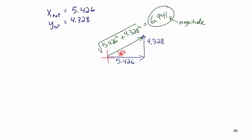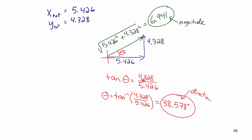To calculate the direction, I'm looking for the angle theta relative to the X axis. The Y side, 4.328, is my opposite side and the X side, 5.426, is my adjacent side. So the tangent of theta equals 4.328 over 5.426. To get the angle itself, I use the inverse tangent function. Theta equals the inverse tangent of 4.328 divided by 5.426. With the calculator in degrees mode, this angle is 38.578 degrees — the vector makes an angle of 38.578 degrees above the X axis.